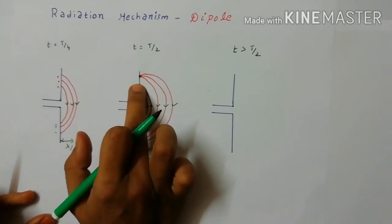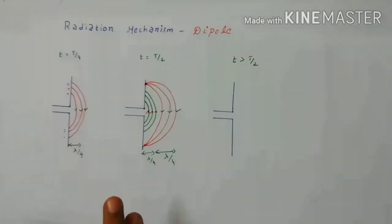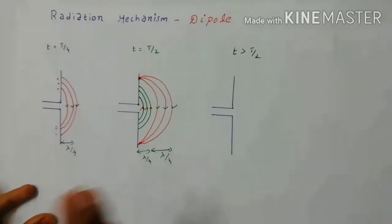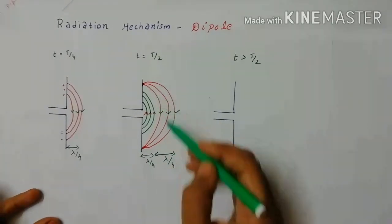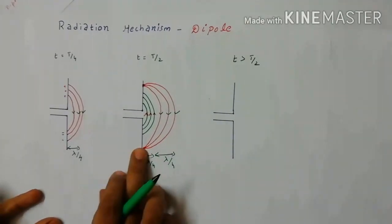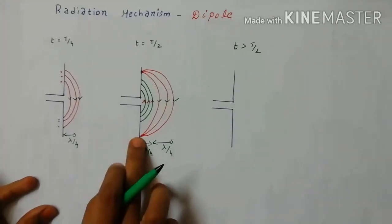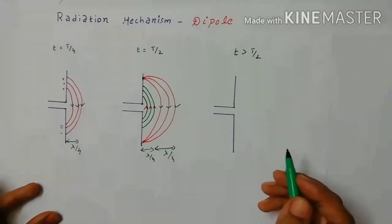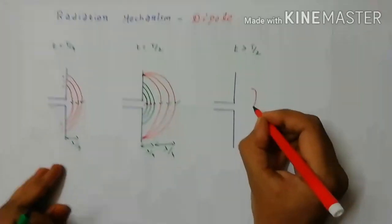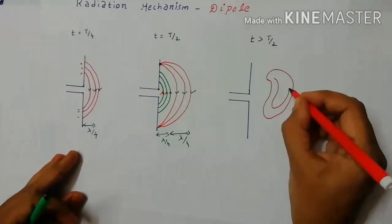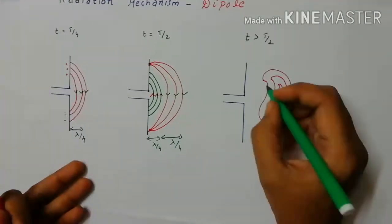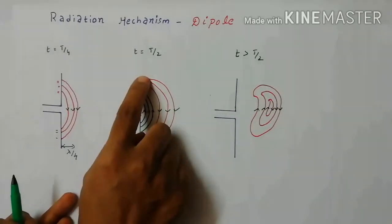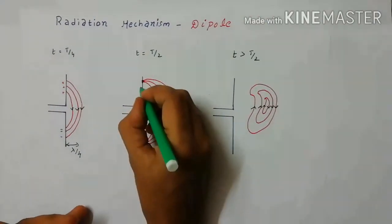As the three negatives replace the positives, the direction of the field lines changes. These first three lines are trying to detach from the antenna, because as the charges get neutralized, there is no binding force to hold the field lines. In the next instant, the three field lines get completely detached from the antenna and form closed loops in free space — three lines moving downward and three lines moving upward in opposite directions, forming closed loops.